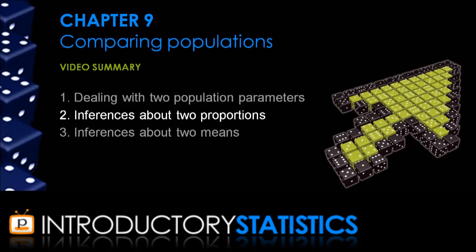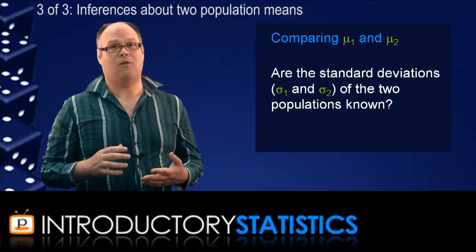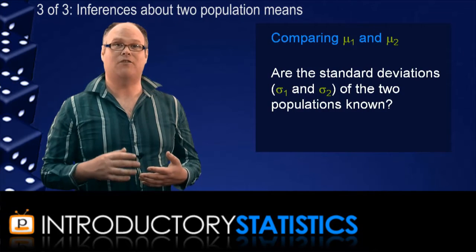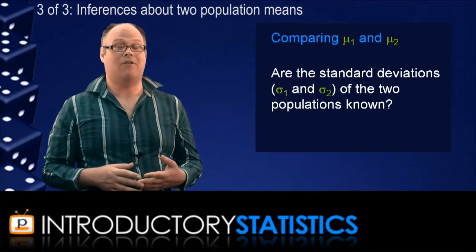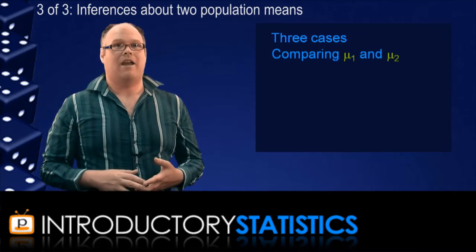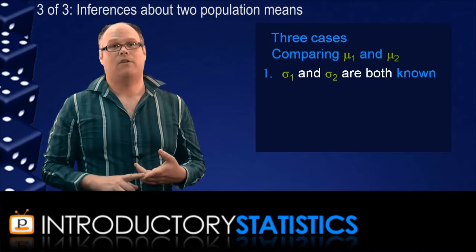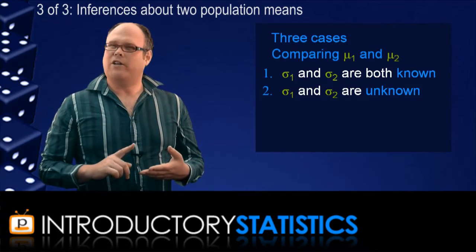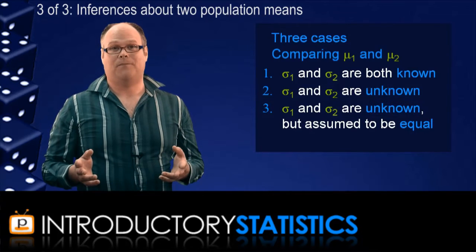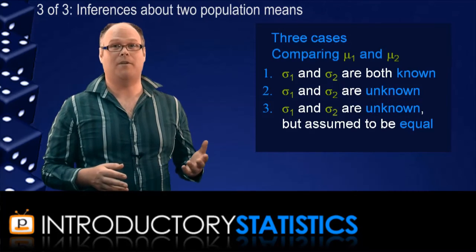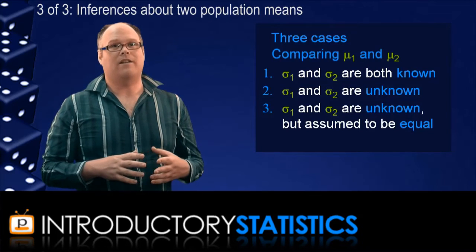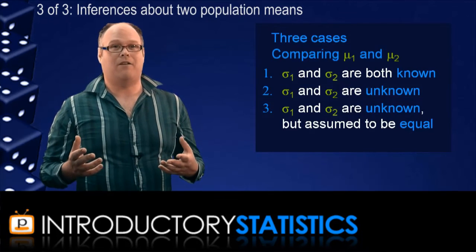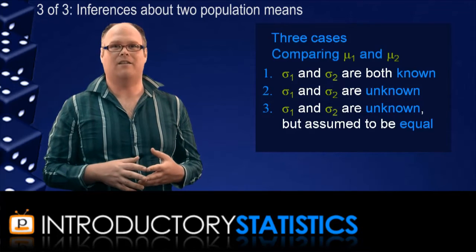We could also look at testing the difference between two proportions, but let's move on to comparing two means. The interesting thing about comparing two means is that, similarly to when we were looking at just one population mean, our method is going to depend on whether the two standard deviations of the two underlying populations are known. There are actually three separate cases: either we assume that they're both known, or we don't assume that they're both known (which is the most realistic option), or we don't assume they're known but we do assume that they're equal.